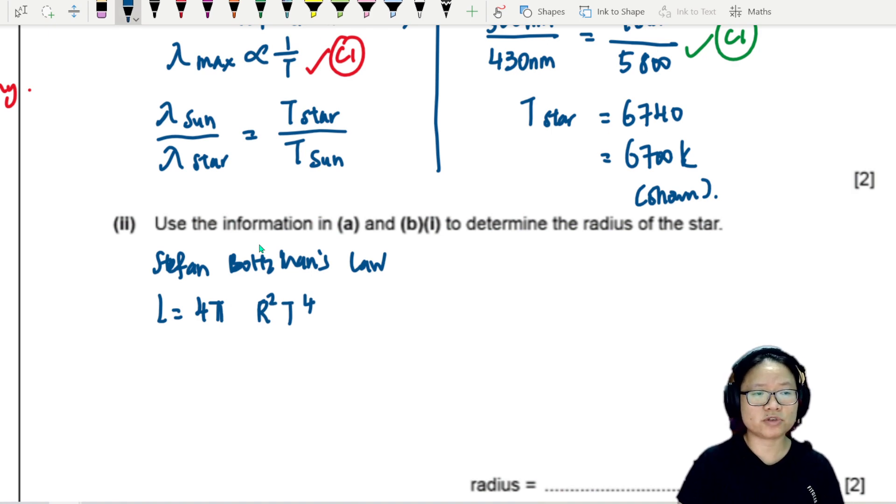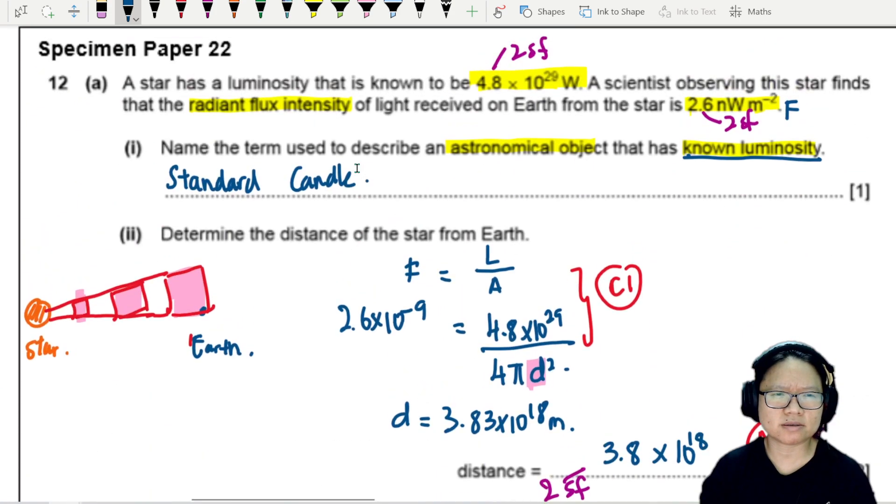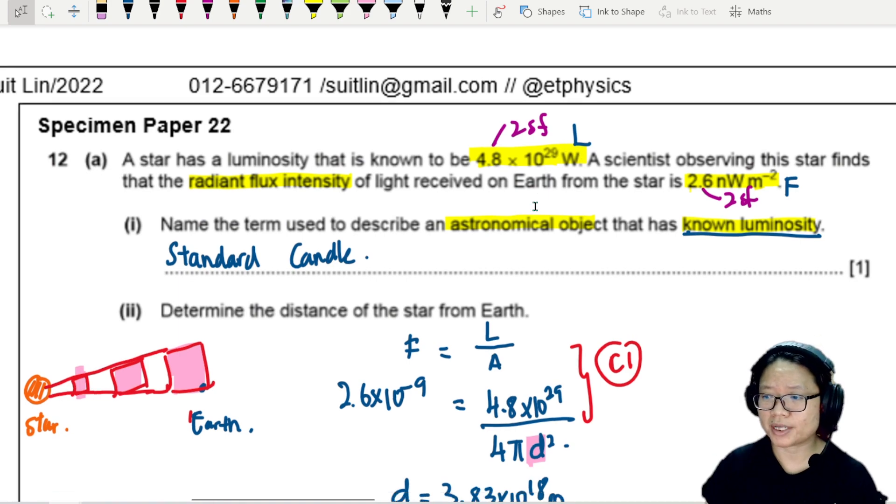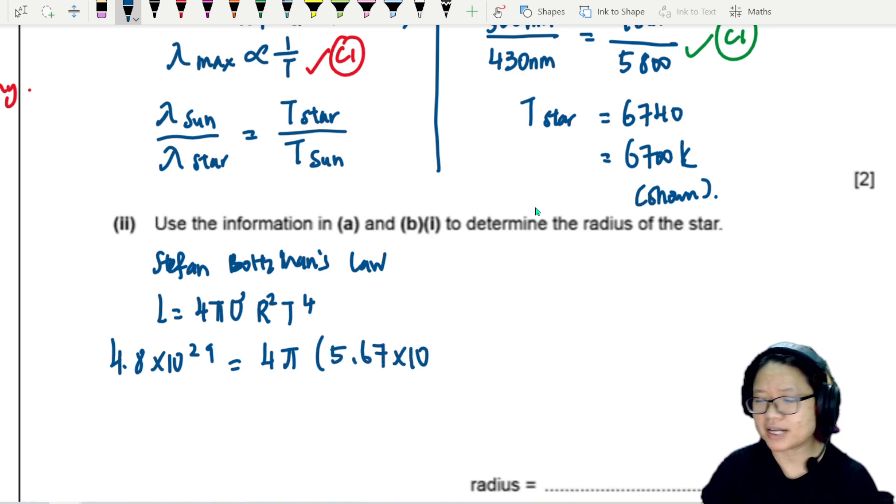Either you use the equation, or you can derive from the relationship between intensity and temperature. This is faster. We already know the luminosity is 4.8 times 10 to the power 29, so we put that in. 4π, we can find the Stefan-Boltzmann constant from your formula sheet, 5.67 times 10 to the power negative 8, R², and the surface temperature is 6700.